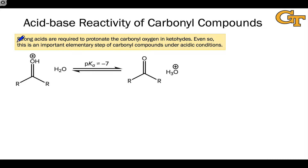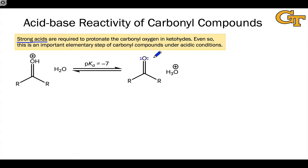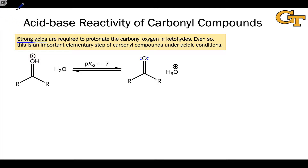Strong acids are required to make this work. Our benchmark for how strong an acid has to be to protonate a functional group is the pKa of the conjugate acid of that functional group. If we look at the pKa of the conjugate acid of a carbonyl compound, that involves protonating the most basic site, the carbonyl oxygen, to generate the protonated carbonyl structure you see on the left.